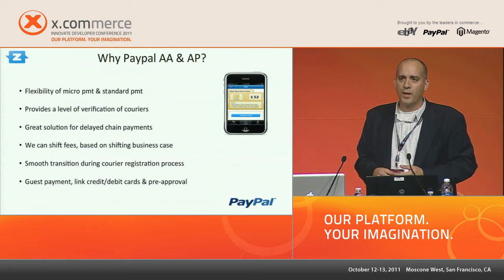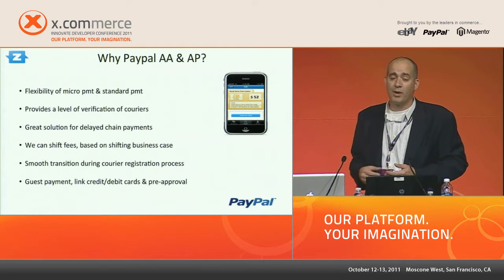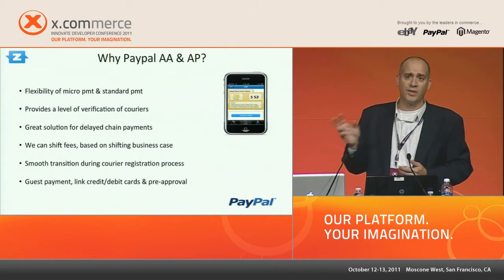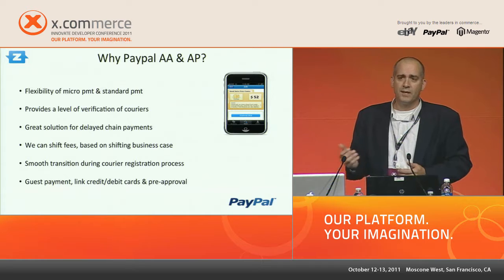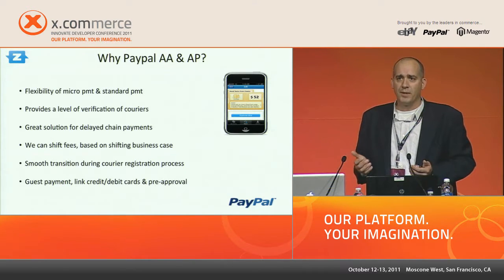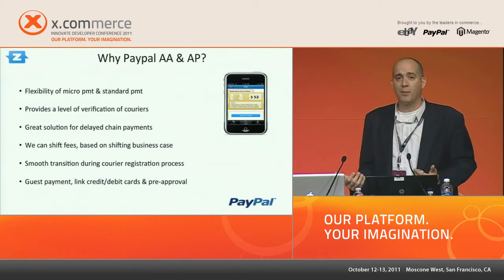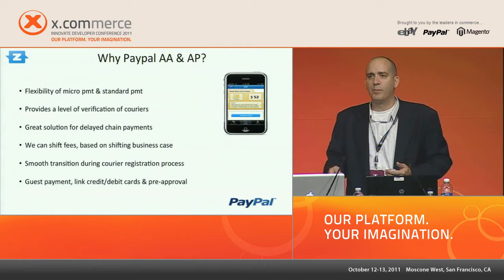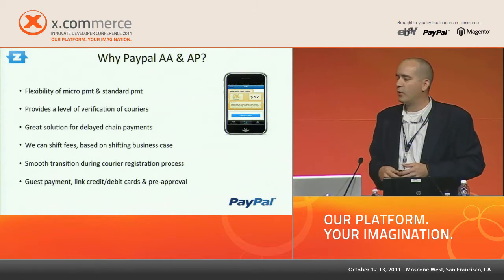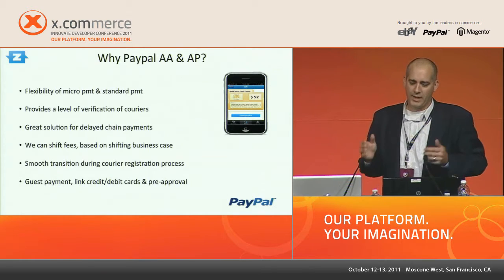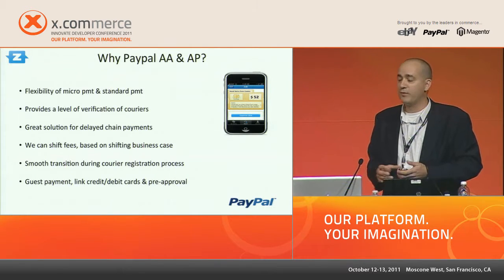Smooth transition during the registration process is critical — the last thing you want is abandonment when signing up users. The adaptive payment process is very smooth; it allows us to elegantly move between our portals and PayPal and back again. Finally, it gives us various forms of payment — guest payment, debit and credit card, and most importantly, pre-approval. Once a user decides they're a fan of Zipments, they don't want to go through the payment process every time — they just approve Zipments to charge their card and it's a one-click purchase. That's our company in a nutshell and why we chose to work with these guys.